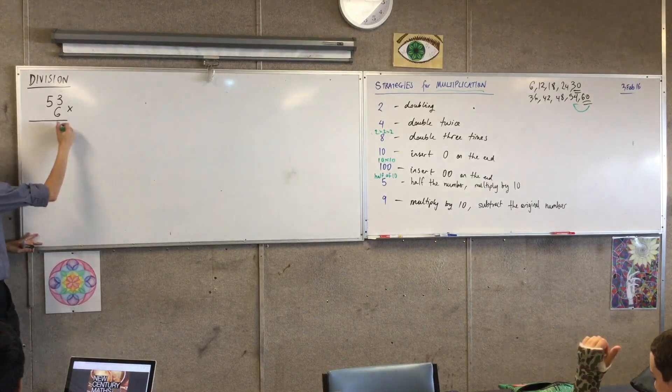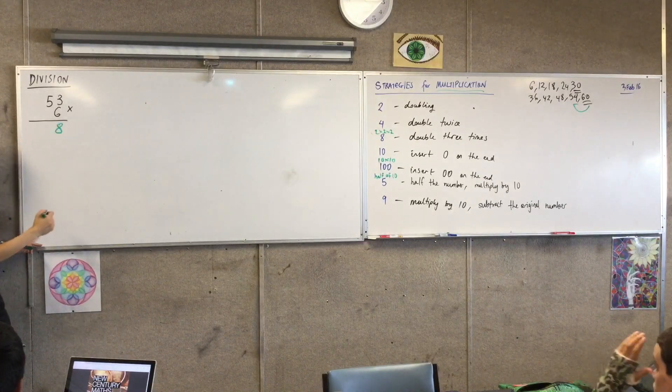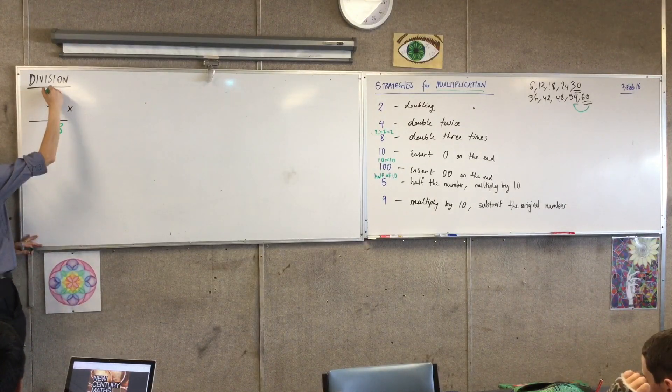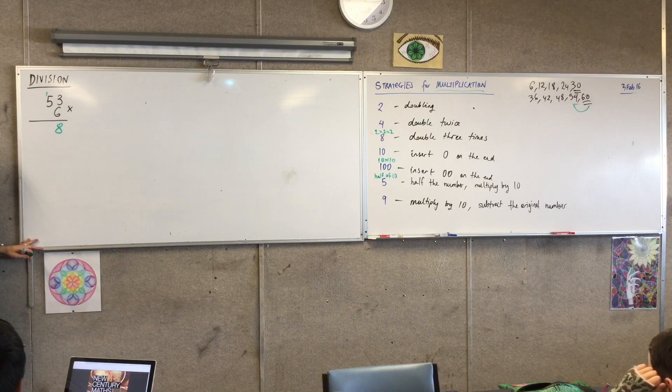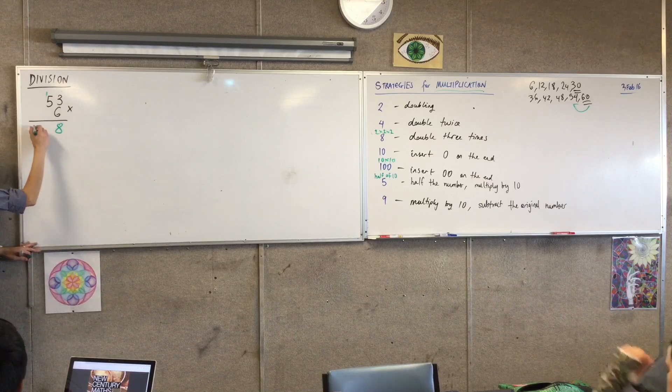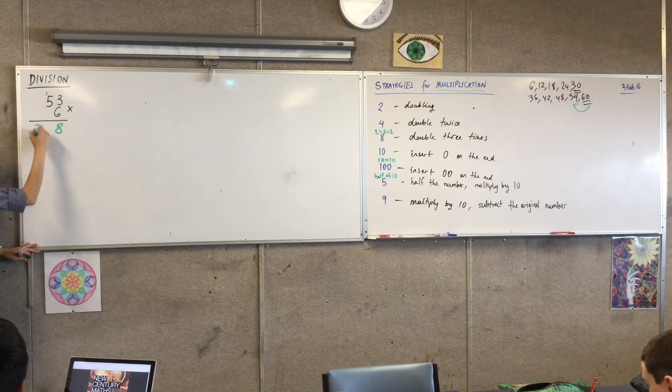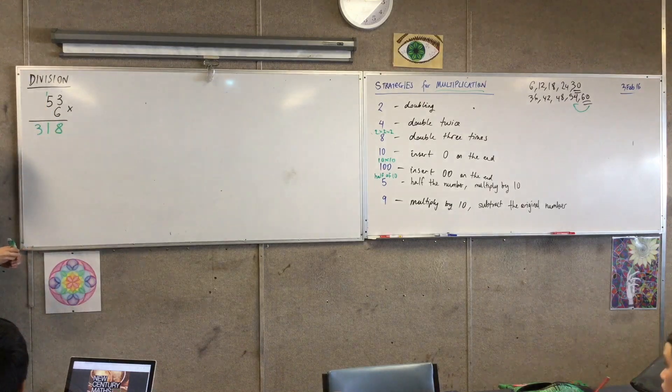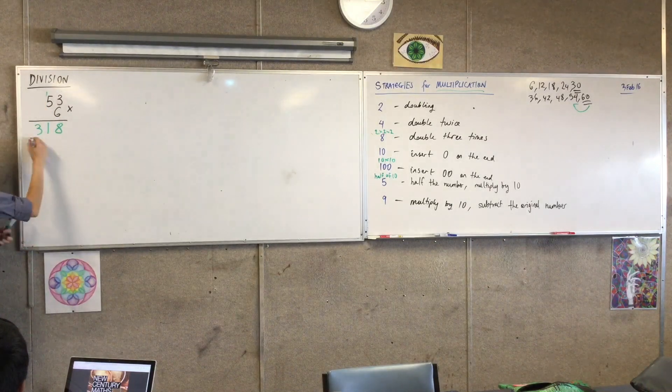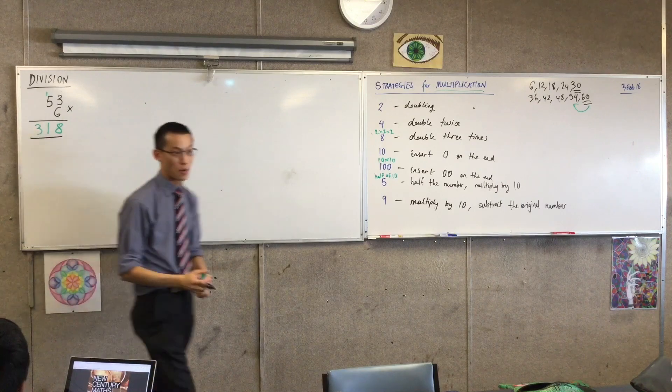I put the 8 in the answer column and then I put the 1 over the 5. Yep. Then I times 5 by 6, which gives me 30, and I add the 1 above it. Perfect, okay, wonderful, well done. So I think most people are comfortable with that.